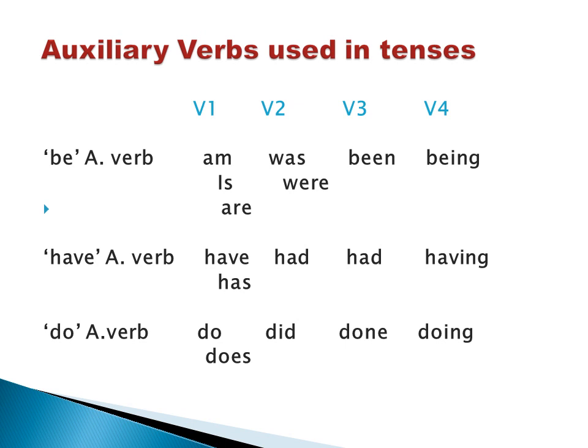Auxiliary verbs play a major role in expressing tenses. Auxiliary verbs used in tenses are be auxiliary verbs, have auxiliary verbs, and do auxiliary verbs — we call them primary auxiliary verbs. Even auxiliary verbs have V1, V2, V3, V4 forms, that is present tense, past tense, past participle, and present participle forms.